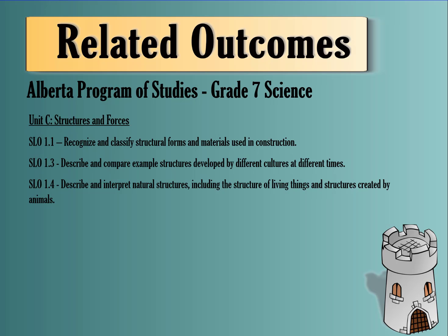The outcomes we're going to cover today are SLO 1.1 — recognize and classify structural forms and materials used in construction; SLO 1.3 — describe and compare example structures developed by different cultures at different times; and SLO 1.4 — describe and interpret natural structures, including the structure of living things and structures created by animals.